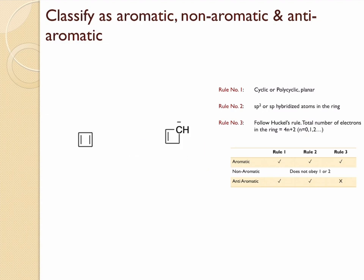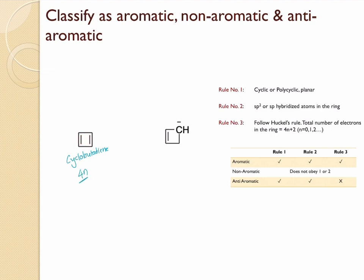Next we have two four-membered ring structures. Cyclobutadiene is cyclic and all atoms are sp2 hybridized, so rule two is obeyed. However, there are only two electron pairs — a 4n system — so cyclobutadiene is anti-aromatic. The next structure has an sp3 carbon, so rule two is disobeyed and it is non-aromatic.